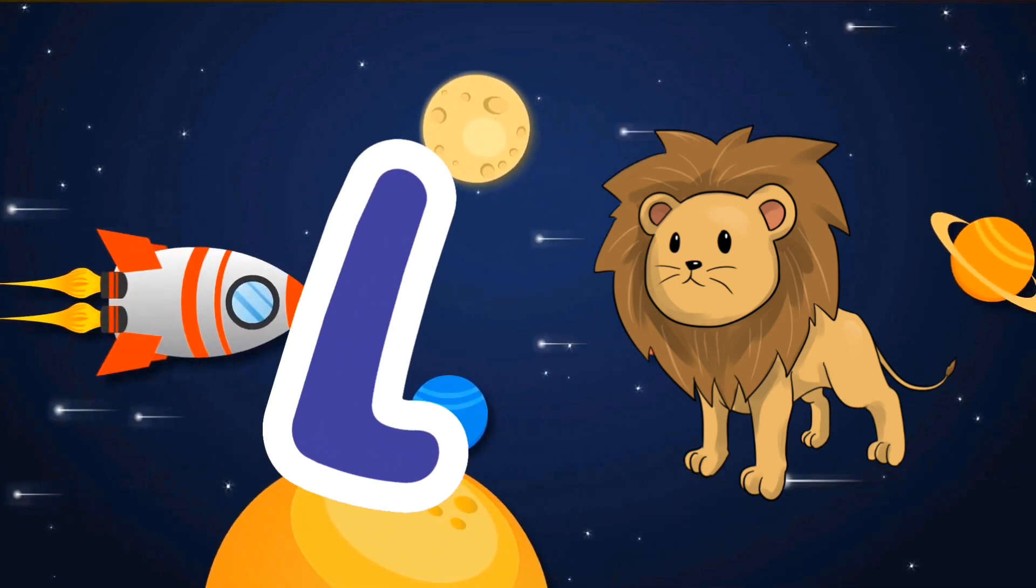I is for igloo, i-i-igloo. J is for jump, j-j-jump. K is for kangaroo, k-k-kangaroo. L is for lion, l-l-lion.